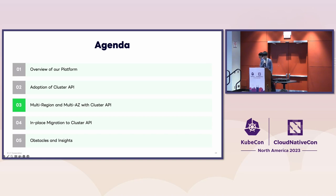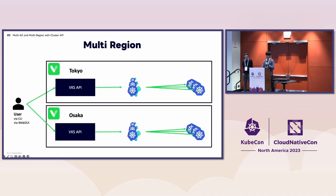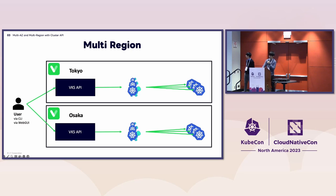From here, I will explain our failure domain design with Cluster API, specifically regarding how we treat regions and availability zones. Our region design is simple — we provide our Kubernetes service independently among regions. In our private cloud, we have one region in Tokyo and another in Osaka, so we built our whole system in Tokyo and a separate system in Osaka. This design implies that each cluster has nodes in only one region; in other words, we don't support multi-regional clusters. Thanks to this simplicity, we can manage our platform with a small team of seven members.